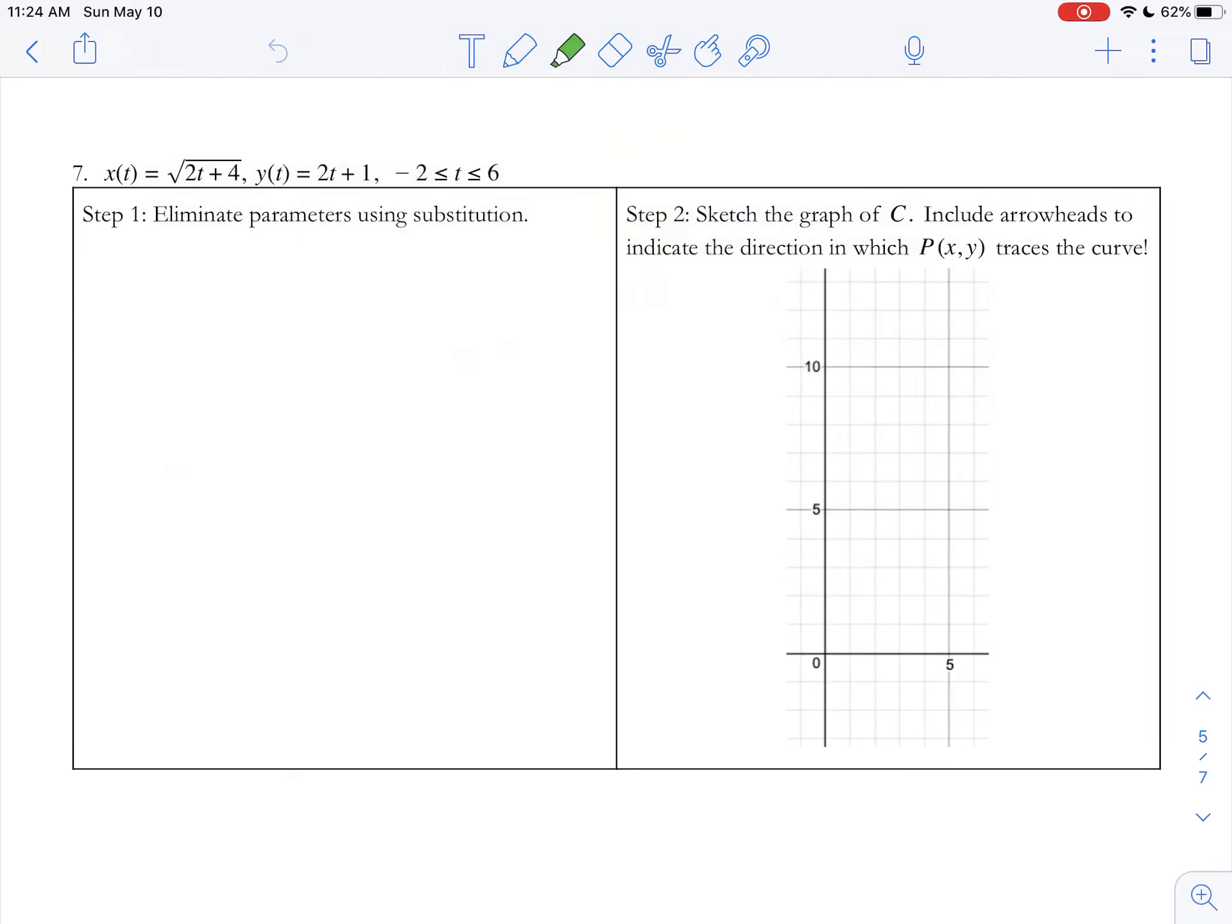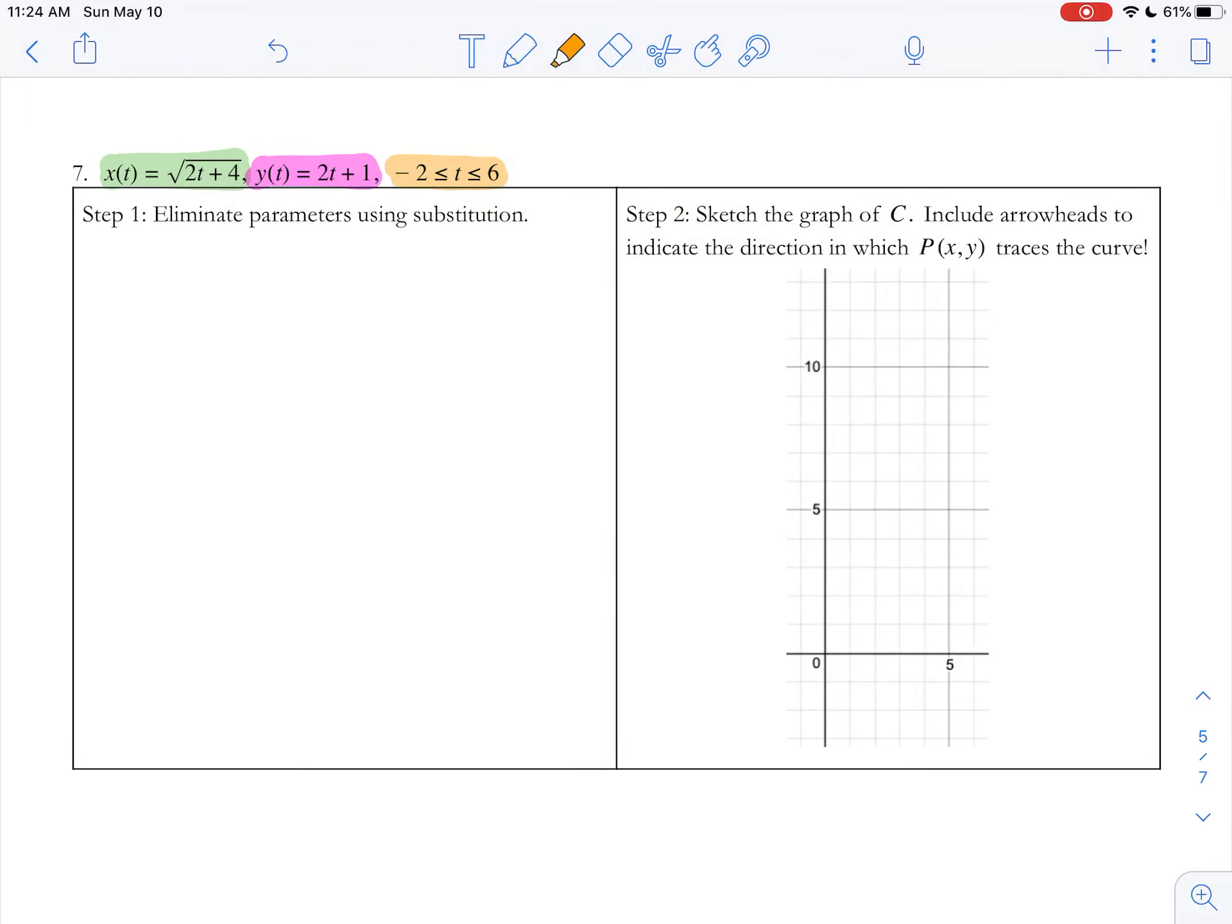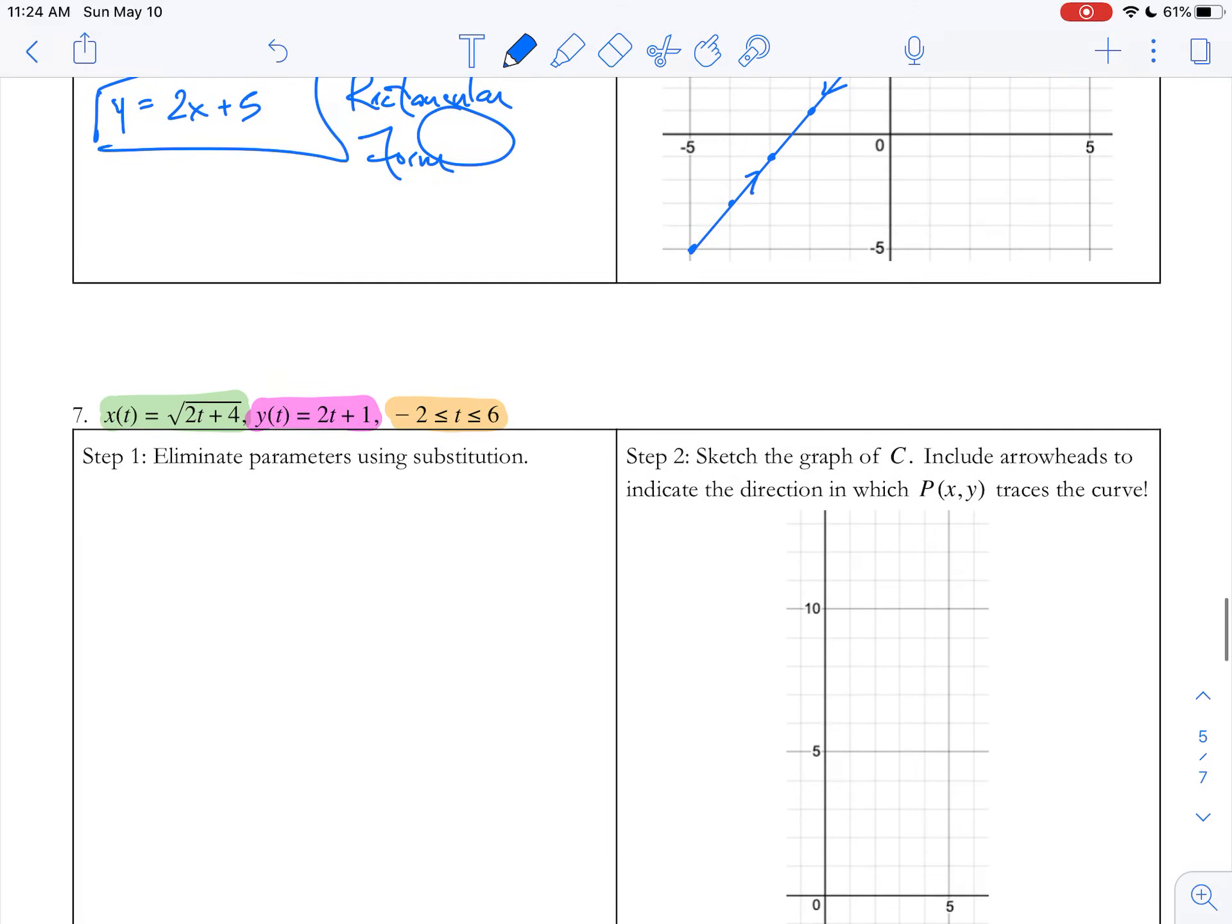Question number seven gives you a set of parametric equations. You've got x(t) = √(2t+4) and y(t) = 2t+1, starting at t = -2 and going to 6. Step one, because we're practicing doing this algebraically, is to eliminate the parameters using substitution.